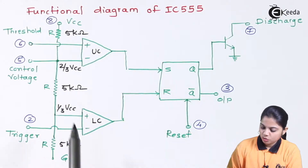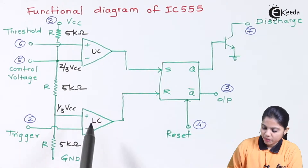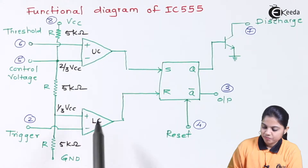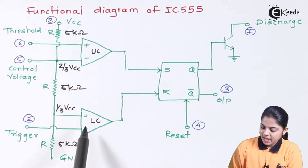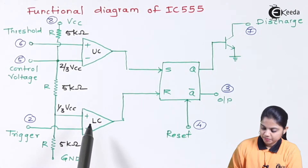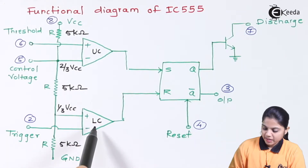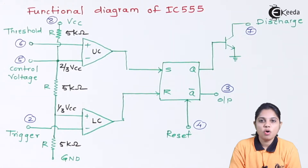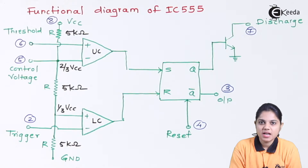First of all we have two operational amplifiers. You can see two triangular operational amplifiers are connected, which are named as UC — standing for upper comparator — and LC — standing for lower comparator. The comparator name is used instead of operational amplifier because here these op-amps are in open loop configuration.